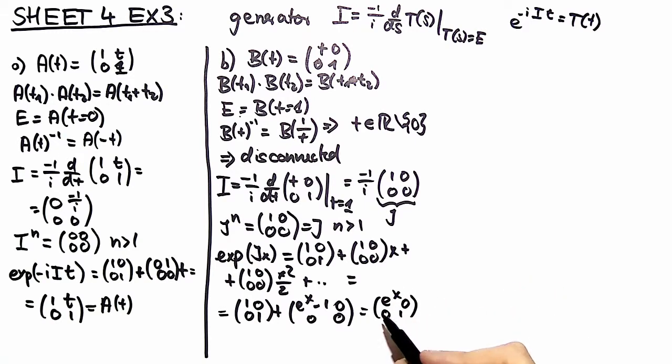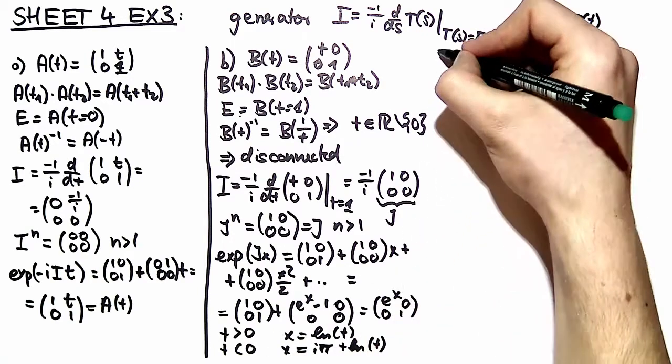Now in order to obtain our B(t)'s, we have to choose for t greater than 0 and t smaller than 0 different x. So we choose for t greater than 0, x being equal to the logarithm of t. And for t smaller than 0, we have to extract a minus 1, and we get that by taking x being equal to i pi plus the logarithm of t. Here you can see again the parameter space lies in the complex plane, and these are two lines which are separated by e to the i pi and they can't be connected, so it's a disconnected group.